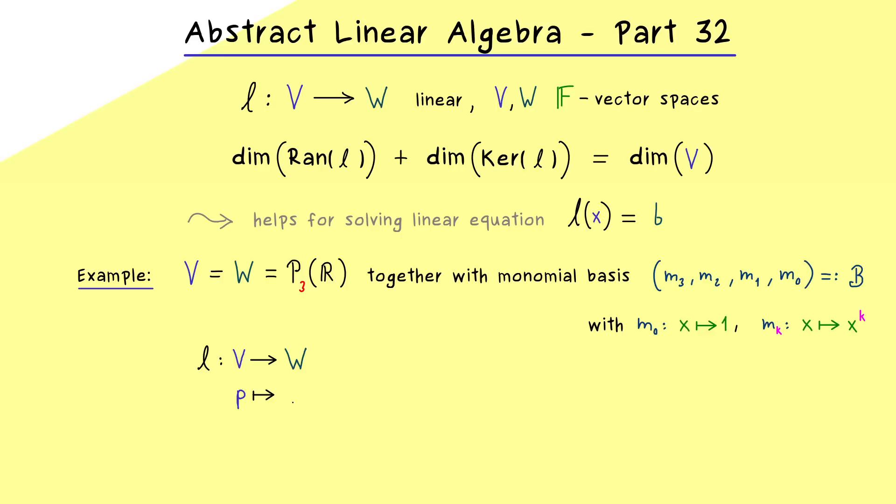And now our example for the linear map L should be given by the derivative operator. So P is sent to P'. And of course we know what this means for the monomials because they get just reduced with the index and the factor k comes in front. The only exception for this nice formula we have for the M0 monomial which is sent to 0 because it's just a constant. This means here on the right hand side we have the 0 vector in the polynomial space which is the polynomial which sends every x to 0. In fact this example we have already discussed in part 25.